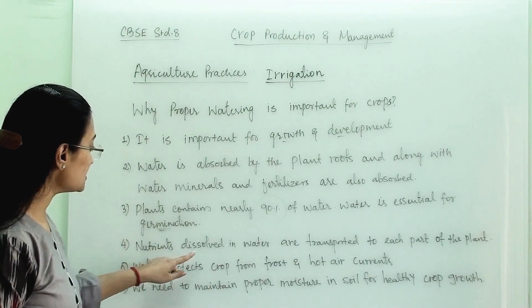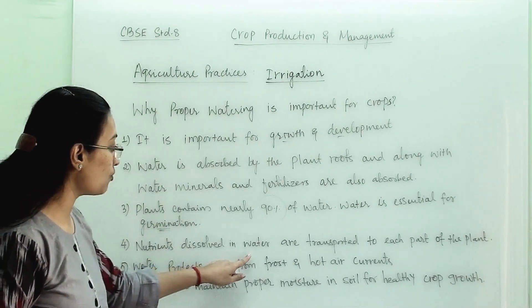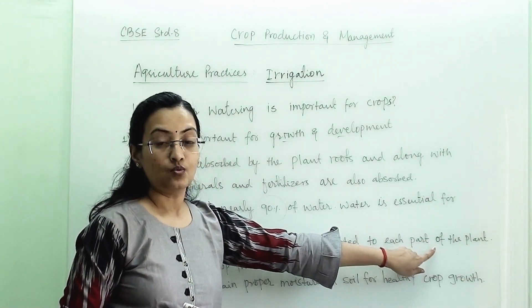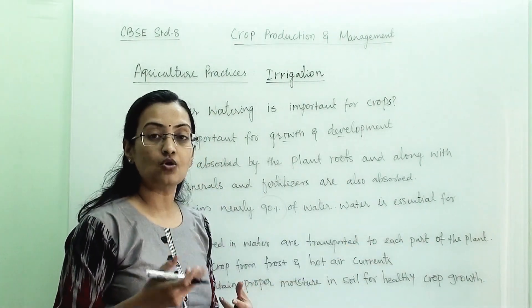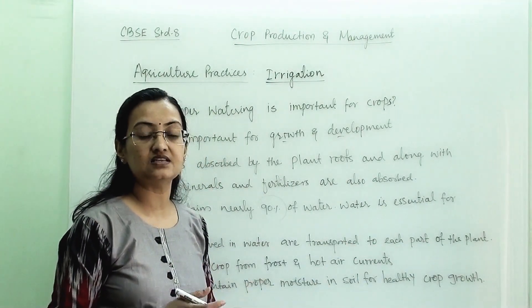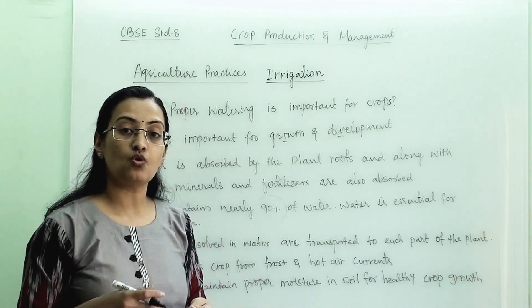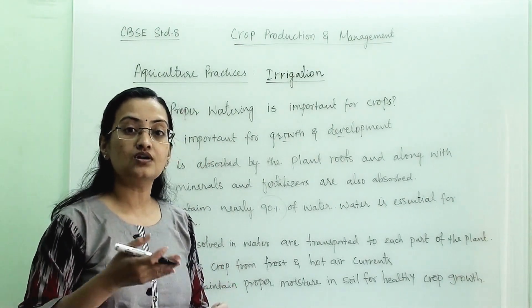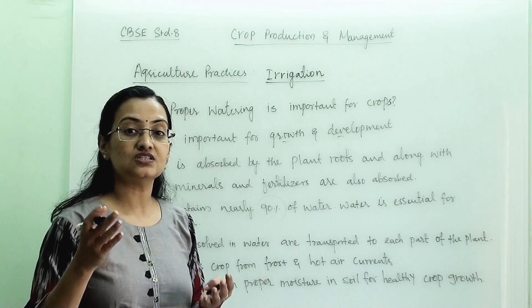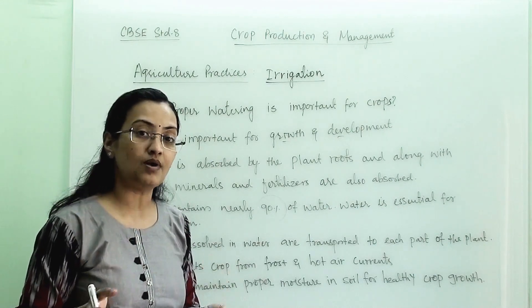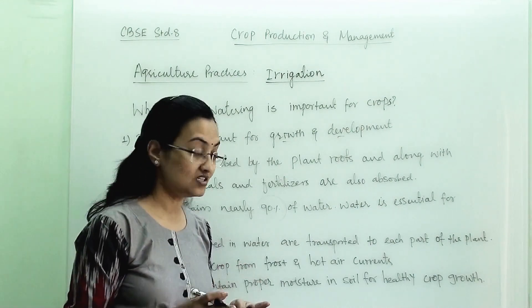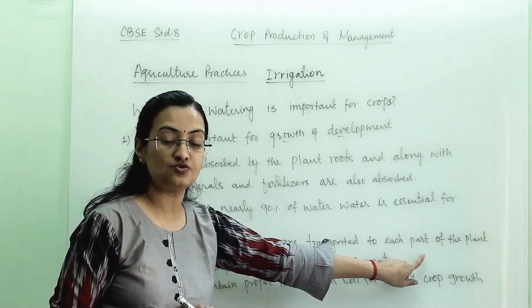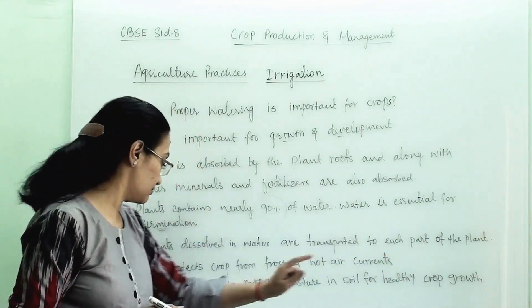Fourth, nutrients dissolved in water are transported to each part of the plant. When we dissolve fertilizers and micronutrients into water and water the plant, that water will reach the leaves and all parts of the plant — this is how nutrients are transported to each part via water.